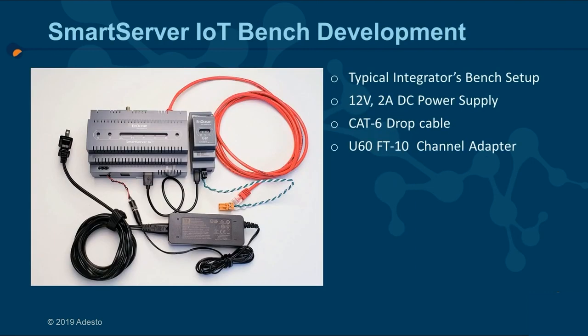Here we have our minimum setup for development. We have our Smart Server IoT powered with a 12-volt power supply, a U60 channel adapter attached, and a Category 6 Ethernet drop cable connected to the ETH0 LAN connection of the Smart Server IoT.